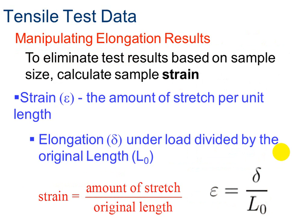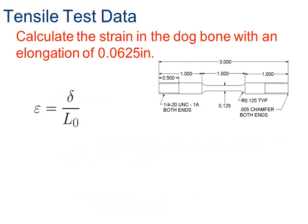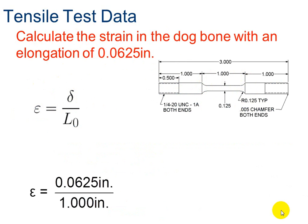Now we need to do the same thing for our elongation results. Instead of stress, we use strain — strain is for elongation, not force. Strain is the amount of stretch per unit of length. You'll want to write these two formulas in your engineering notebook. Strain equals the amount of stretch divided by the original length. For example, if the dog bone elongated 0.0625 inches and the original length is 1 inch, then strain equals 0.0625.